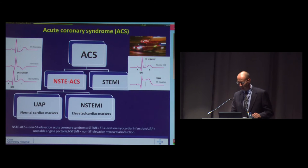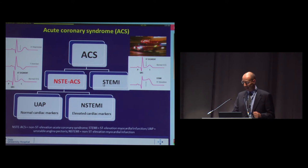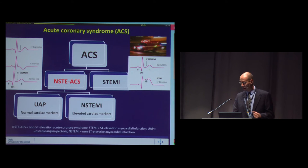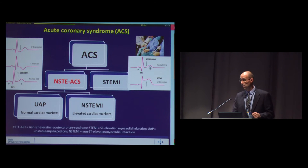Acute coronary syndrome comprises ST elevation myocardial infarction and non-ST elevation acute coronary syndrome. STEMI patients are relatively easy to identify — they have chest pain, and on the ECG we see ST elevation. When we see this, we send the patient directly to acute revascularization therapy, where we usually find coronary artery occlusion.